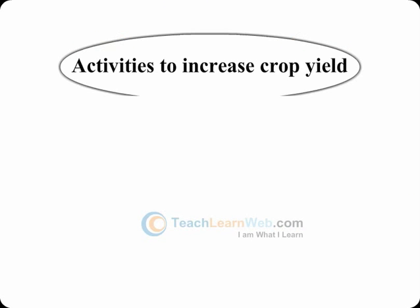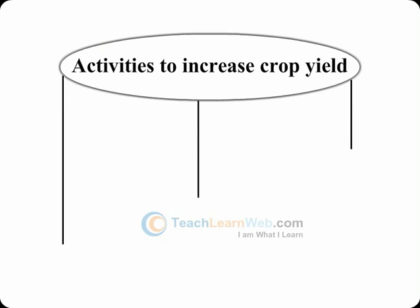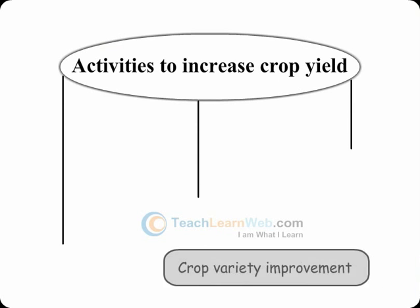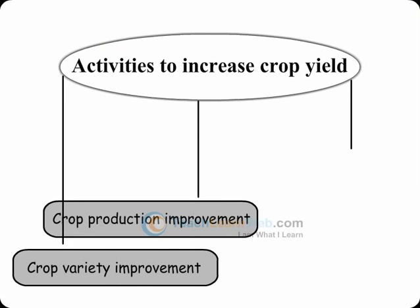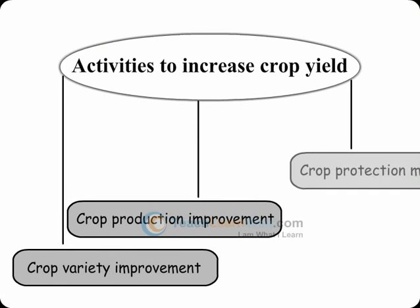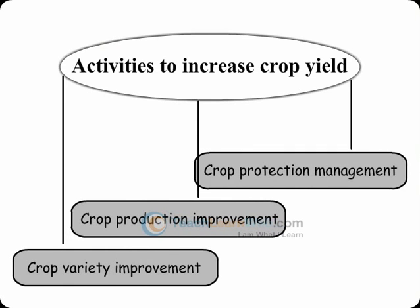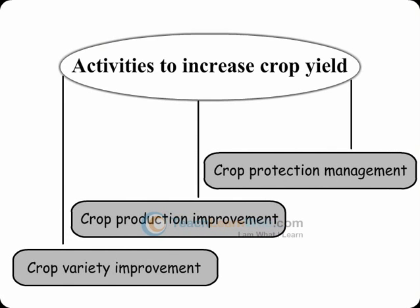The group of activities employed for improving crop yield are crop variety improvement, crop production improvement and crop protection management.